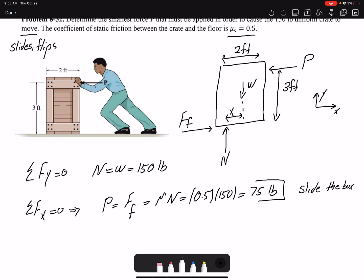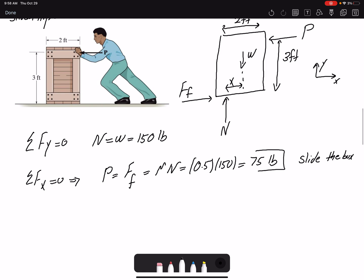But will the box flip or tip before we reach that load? We are going to find it out by our third equilibrium equation, summation of moment. To make it easier, I'm going to take moment about this point, point A, because then I get rid of the force W and the friction force, and then I will have a balance between the normal force and my force P.